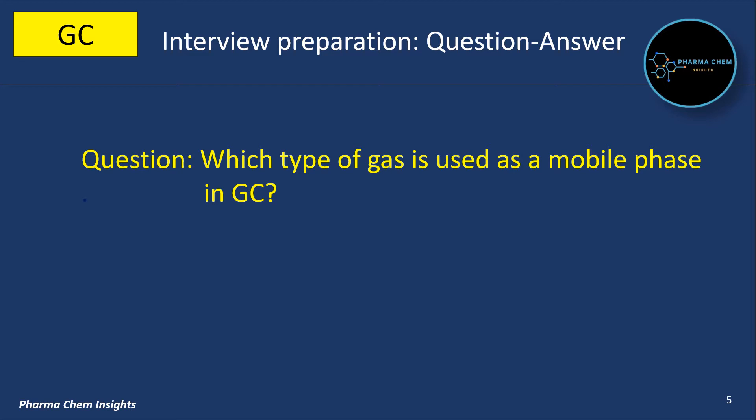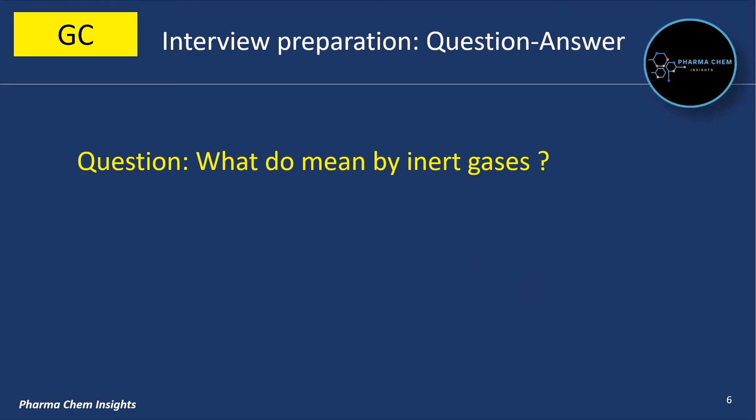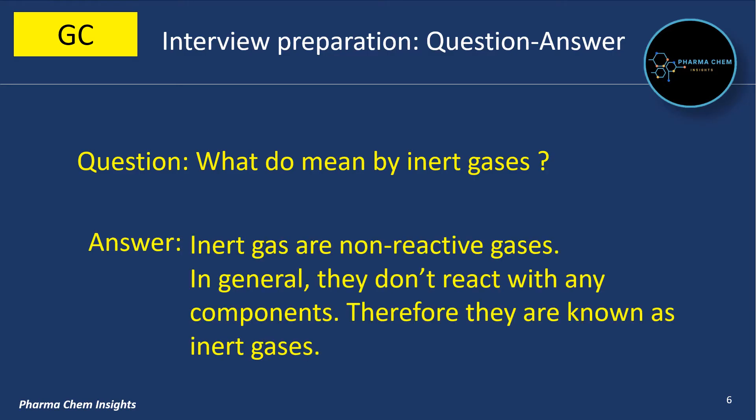Next question: Which type of gas is used as a mobile phase in gas chromatography? Inert gas is used as a mobile phase in gas chromatography, also referred to as carrier gas. Inert gases are non-reactive gases — they don't react with any components, which is why they are known as inert gases.